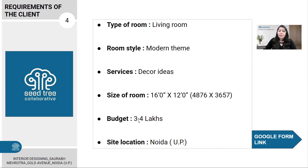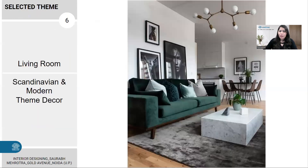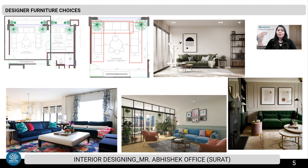Depending on your budget, we will show you reference images from Google, from Pinterest, and from the designer's previous work. For example, if you have a $1,000 budget, we cannot suggest a sofa that costs $30,000 — so the guidance is matched to your budget.